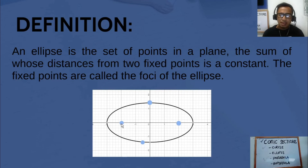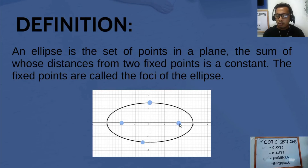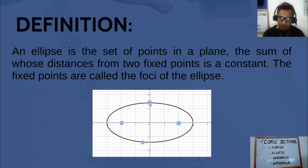For example, we set the point negative two, zero as focus 1 and the point positive two, zero as focus 2. For any point on the ellipse, the distance from focus 1 to that point plus the distance from that point to focus 2 should be constant. That sum remains the same for every point on the curve, and that is an ellipse. Obviously, an ellipse is not a function.